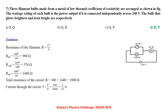Three filament bulbs made from a metal of low thermal coefficient of resistivity are arranged as shown. The voltage rating gives the power output when connected independently across 240 V. Resistance of each filament R equals V squared by P. So resistance of the 60 W lamp is 960 ohm, the 100 W lamp is 576 ohm, and the 40 W lamp is 1440 ohm. Total resistance of the circuit is 360 plus 1440, that is 1800 ohm. Current through the circuit I equals 240 by 1800, which is 2 by 15 ampere.